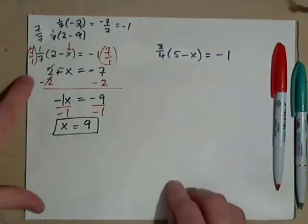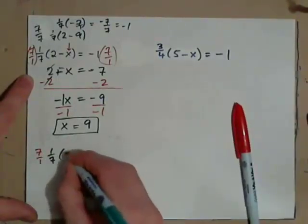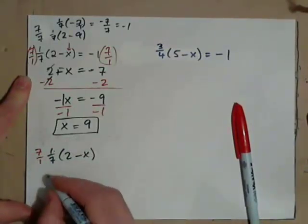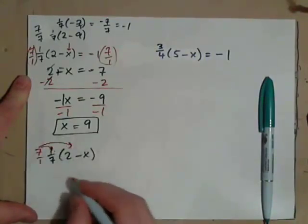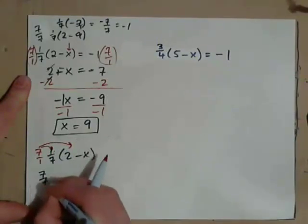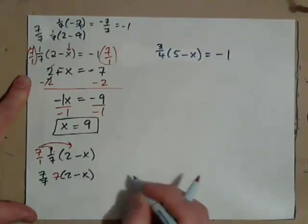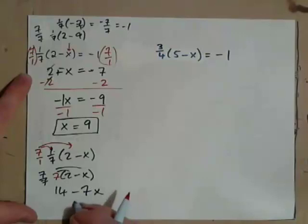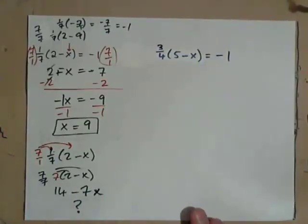So the question is, when I do this, 7/1 times 1/7, and then you've got (2 - x). This makes 7/7. We're clear on that. But why don't we multiply the 7 by this as well, and then go ahead. So okay, let's get 7/7, which is 1, but also do this. 7 times (2 - x), and then get 14 - 7x. So why is this incorrect? It is incorrect. Why is it incorrect? Let's try and explain that.